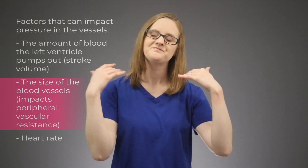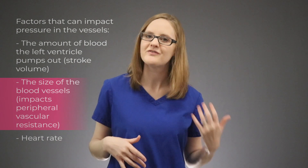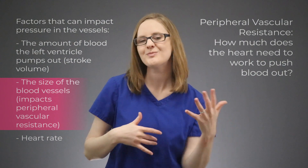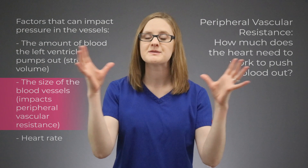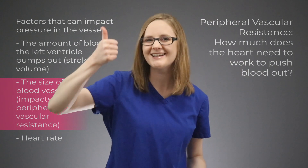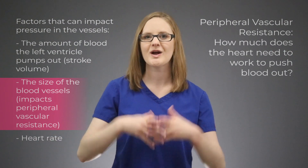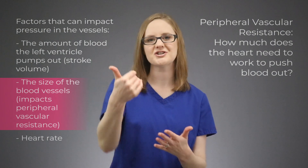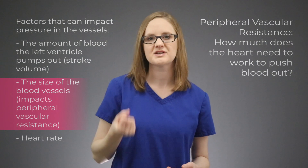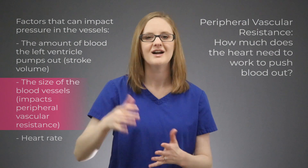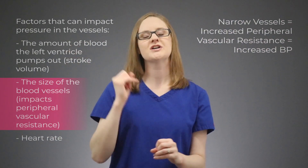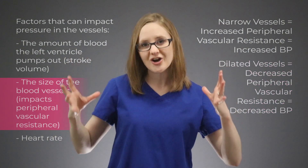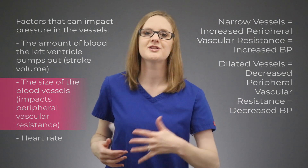Now let's talk about the size of the blood vessels. The size of the blood vessels impacts something called peripheral vascular resistance. When you hear that phrase, all I want you to think about is how much is the heart going to need to work to push that blood out. Back to our hose example: if the water hose itself is smaller or more narrow, the pressure will increase. What do you do if the water hose can't quite reach the person you're trying to spray? You put your thumb on it, and that makes it spray farther because that pressure is greater. So when you make the hole in the hose smaller, you increased the resistance and that increased the pressure. If the blood vessels are more narrow, there is more peripheral vascular resistance and the blood pressure will be greater. On the flip side, if the blood vessels are dilated or larger, there is less peripheral vascular resistance and therefore the blood pressure will be lower.